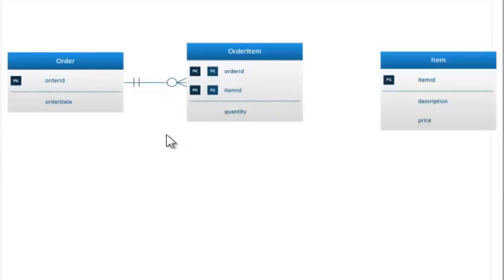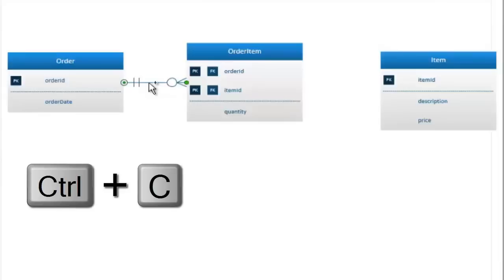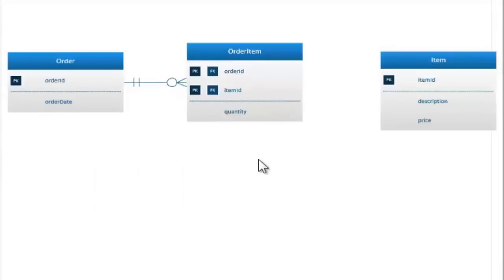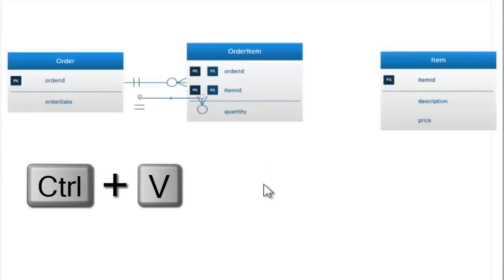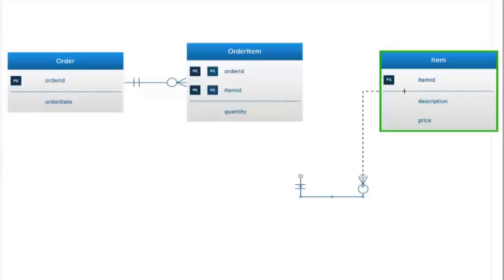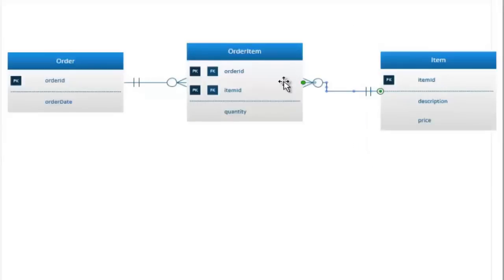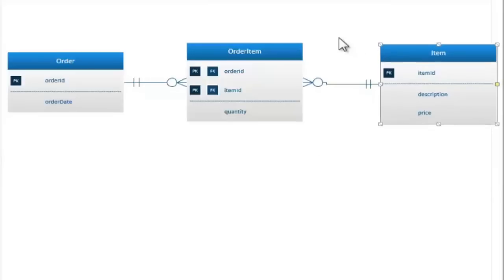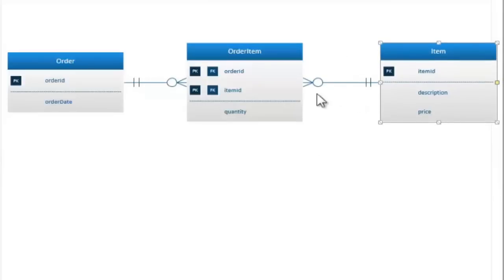Since I like the way my current relationship line looks, I will select it and make a copy by pressing Control+C on my keyboard, then click on the drawing canvas and press Control+V to paste. Using the same strategy, I can then use this copy to interconnect my item table to my order item table. I may also reposition my item table a little bit so that my lines look nice and clean.